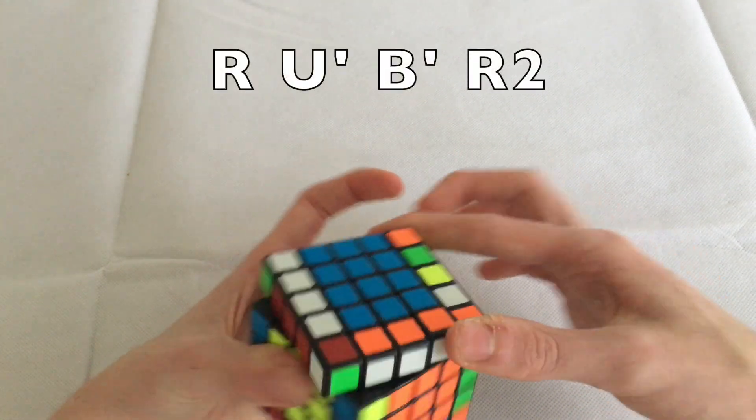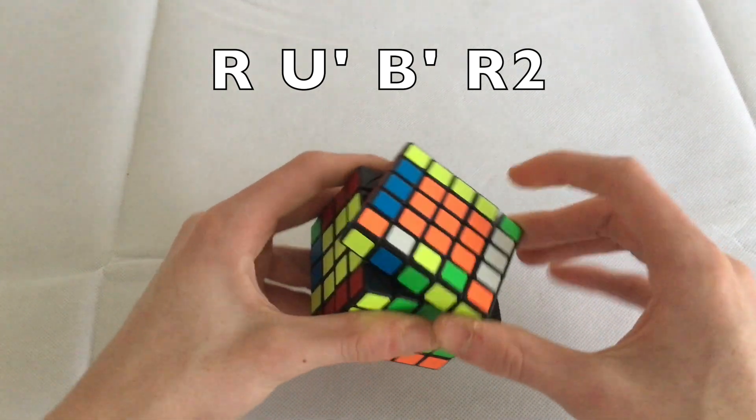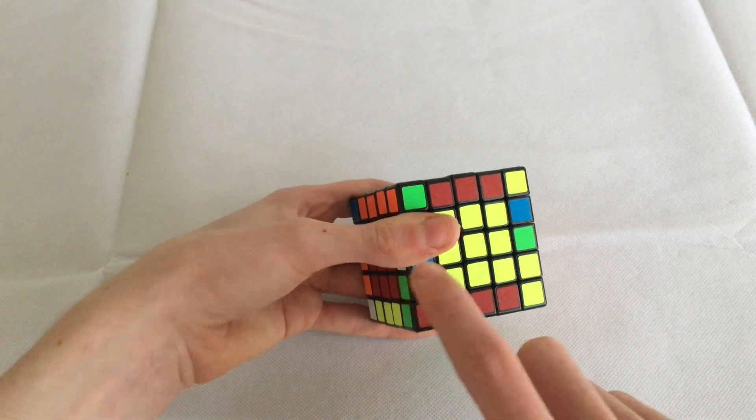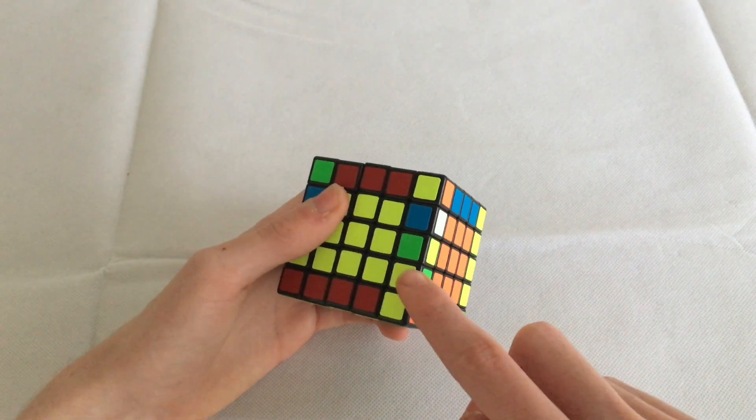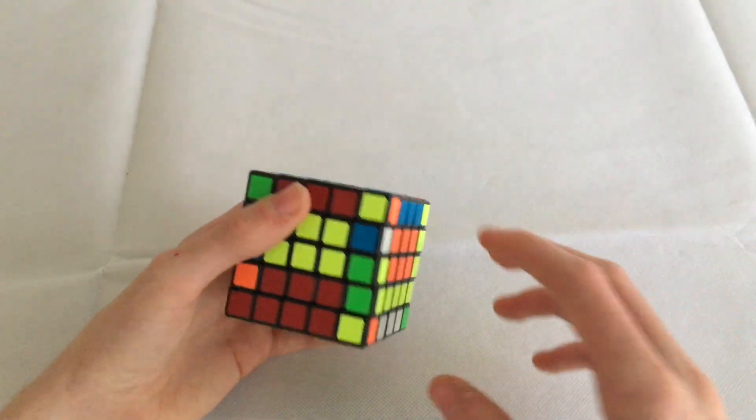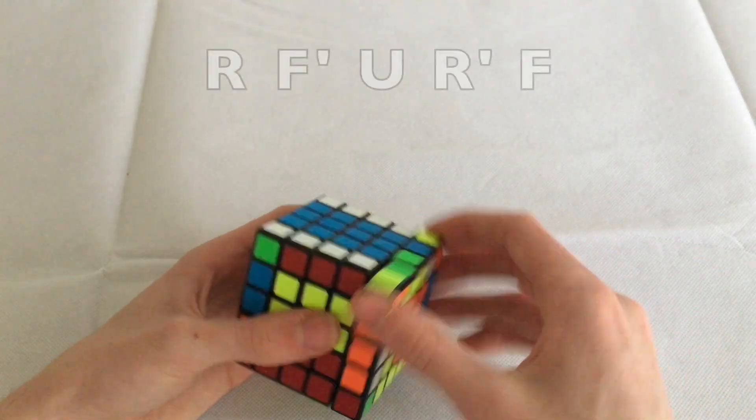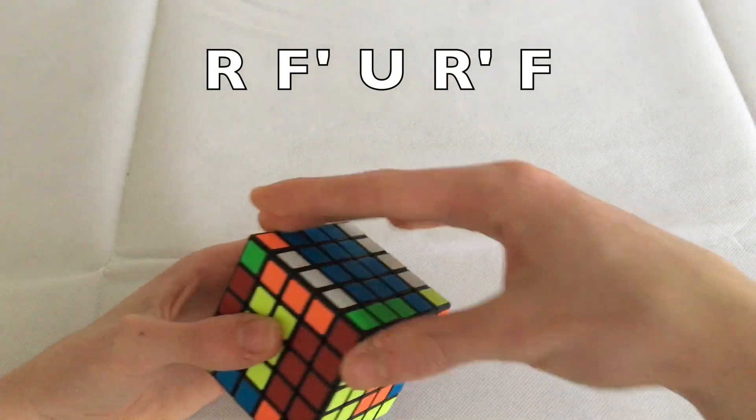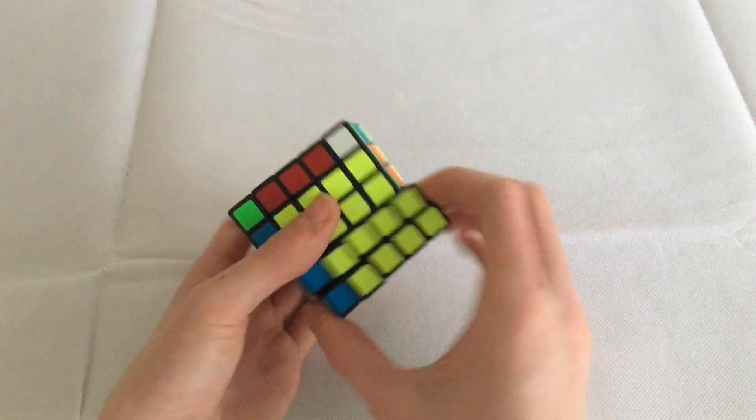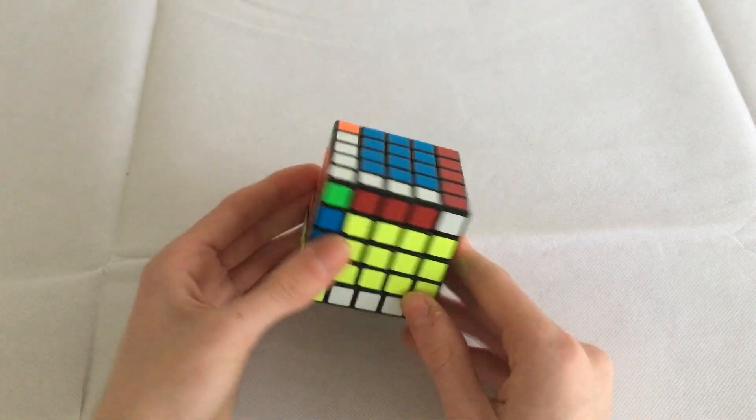So to slice this piece into this piece, we have to flip this edge pair around by doing our algorithm R U' B' R2, and as you see we flip this around. And what we can do is we could slice this with its similar piece which is here, and then we'll perform our flipping around the edge pair after slicing, which is R' F U R' F. And then slice, and as you can see we've completed the two edge pairs.